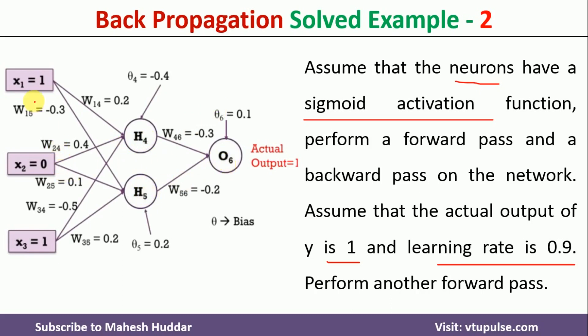In the backpropagation algorithm, the input is propagated through the network so that we can calculate the output at the output layer. Once the output is calculated, we calculate the error, and using the error we update the weights. Once the weights are updated, the input is propagated through the network again. We calculate the output at the output layer again, then calculate the error. If the error is acceptable, we stop the algorithm.